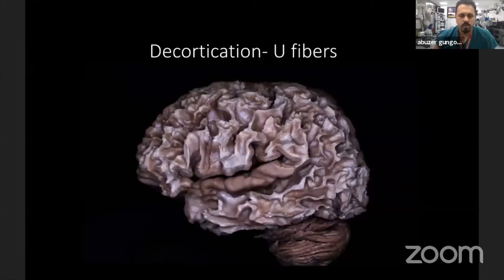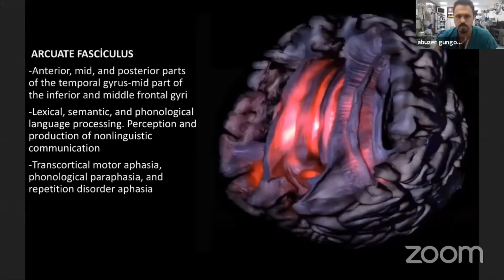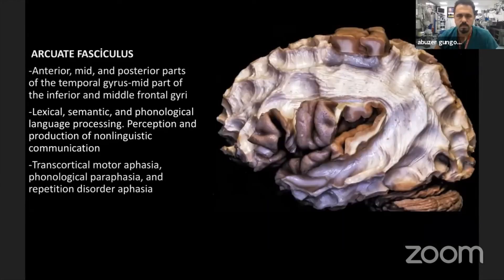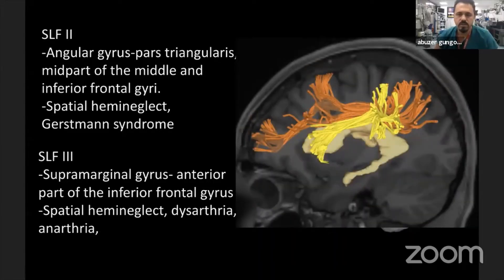When you decorticate, you can first see the U-fibers, which connect nearby gyri. After removing the U-fibers, you can see the superior longitudinal fascicle 2 and 3. SLF-2 connects the pars triangularis and angular gyrus to the anterior part of the frontal gyrus. SLF-3 connects the supramarginal gyrus, pars opercularis, and pars triangularis, and you can see their relationship with the ventricle.